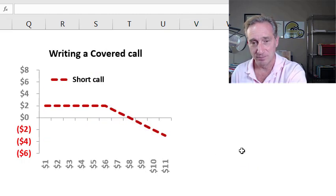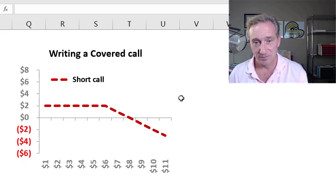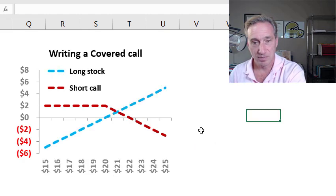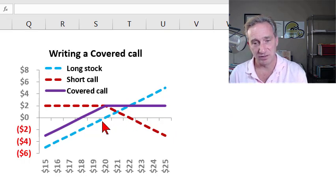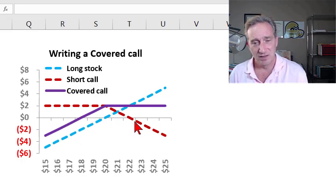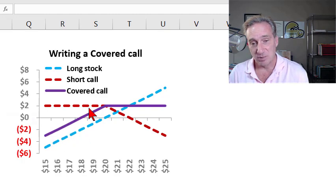The third of the four is a classic trading strategy. We're still on simple trading strategies and it's writing a covered call. Here we have short the call plus long a stock. And those two securities combine into the portfolio in purple, which is the covered call.